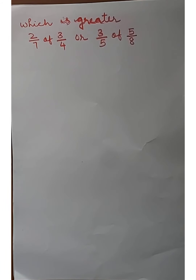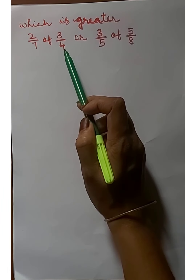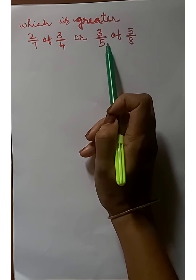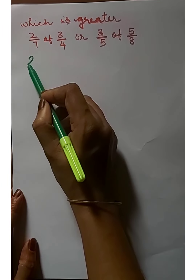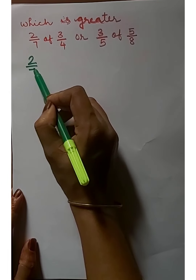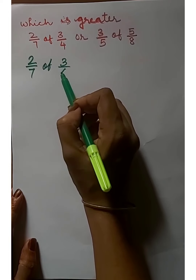Hi dears, welcome back to Max class. Today we have discussed about continuation of exercise number 2.3. Our first question: which is greater — 2/7 of 3/4, or 3/5 of 5/8? We find 2/7 of 3/4.